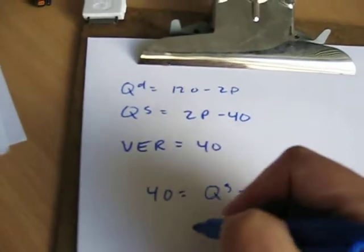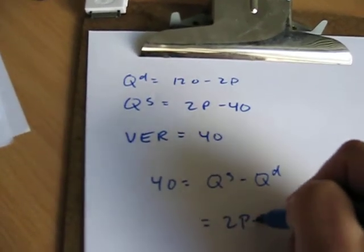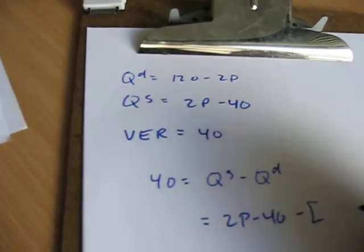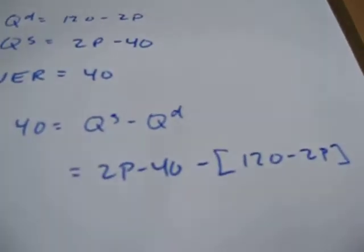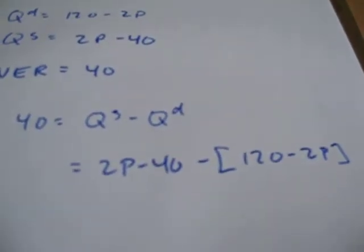So, plug our two formulas in there. Quantity supplied is 2p minus 40 minus quantity demanded, 120 minus 2 times the price. Make sure you put your brackets there because otherwise you'll make a sign error.